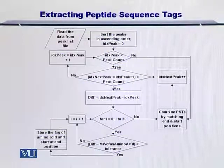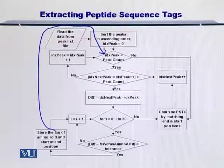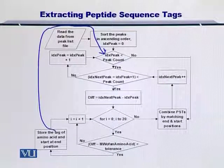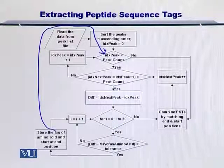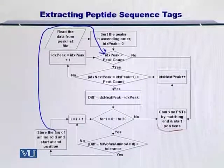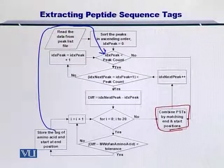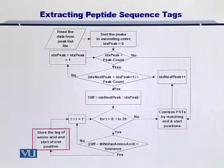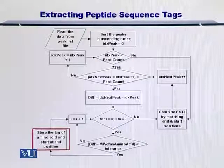Once you have done that, you can go back and repeat this process from the next peak. But this time the next peak will be your current peak and the peak after that will become the new next peak. So this is important in order to exhaustively search for all possible amino acid tags. At the end, what you do is you combine the PSTs by matching the start and end positions, similar to what we just saw in the previous slide. At the end, you have stored all the tags and you have connected them together and you have arrived at the sequence of the peptides, or simply the peptide sequence tag.